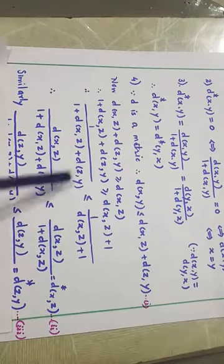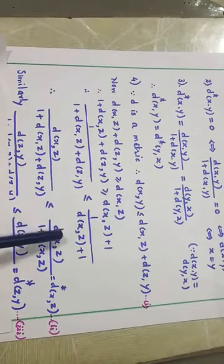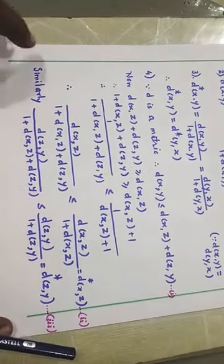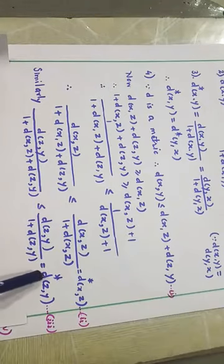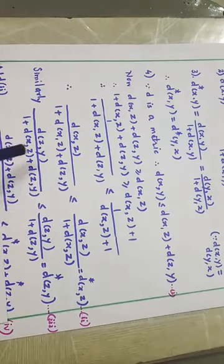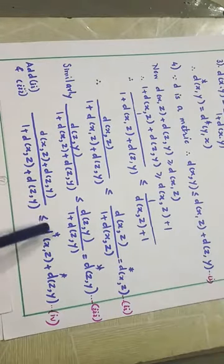Similarly, since D(x,z) + D(z,y) ≥ D(z,y), we get D(z,y)/(1+D(x,z)+D(z,y)) ≤ D(z,y)/(1+D(z,y)) = D*(z,y). Adding these two inequalities — the denominators are the same — we get (D(x,z)+D(z,y))/(1+D(x,z)+D(z,y)) ≤ D*(x,z) + D*(z,y). Call this inequality (4).